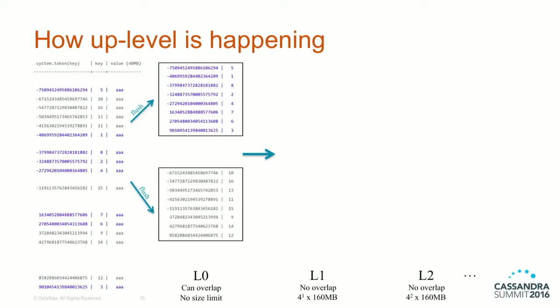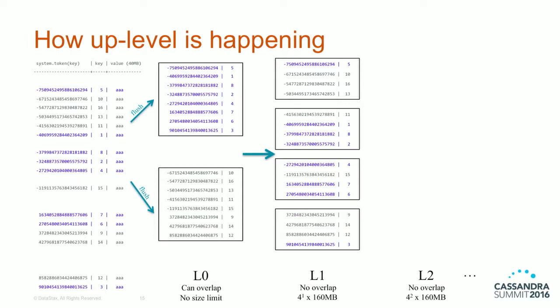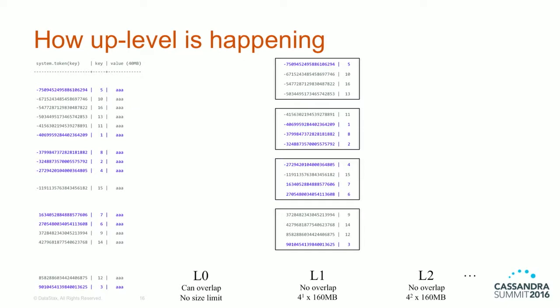As long as Level 0 is not empty it will trigger compaction. The compaction finds two overlapping SSTables on L0 and adds them both to its compaction candidates. It sorts all the information from both L0 SSTables by token value and lines them out as four SSTables on Level 1. Those four SSTables on Level 1 are not overlapping — they're separate token-value ranges. Level 0 can now be empty since all data has migrated to Level 1. Since Level 1 is supposed to accommodate up to four SSTables, we're in a steady state if no more flushes occur.